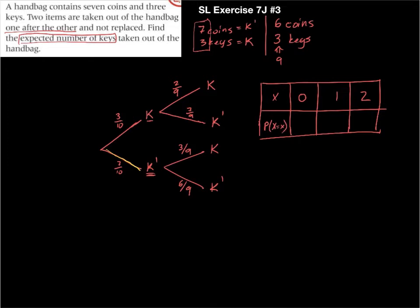Well the probability of getting no keys would be this one, if I draw no keys right there. And because these two branches follow one right after each other, I can get that probability by going seven over ten times six over nine, and I get forty-two over ninety. I'm just going to write in forty-two over ninety for now, and I may reduce it later.